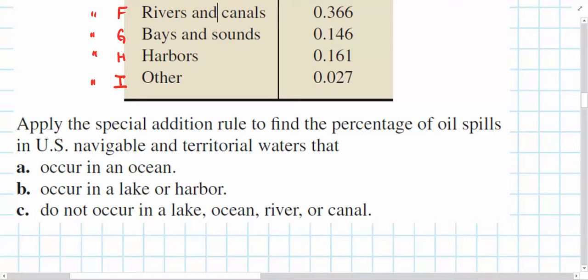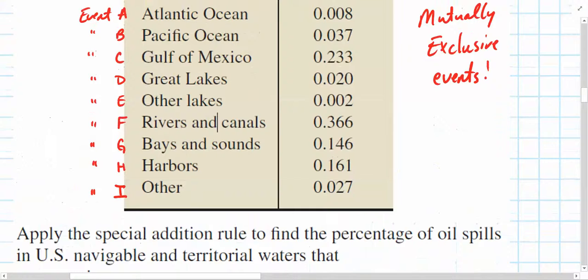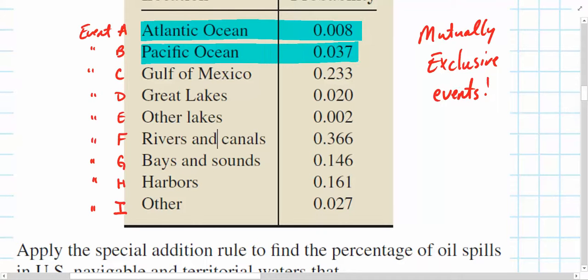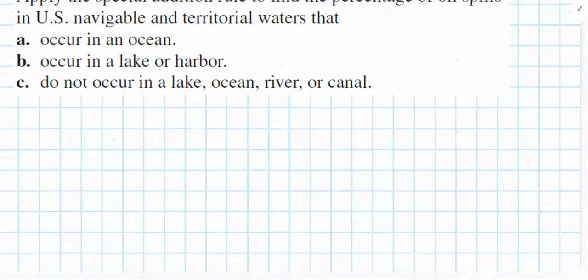So, the instructions tell us to apply the special edition rule to find the percentage of oil spills in U.S. navigable and territorial waters that occur in an ocean. So, all of those events that occur in an ocean, well, there we go, we've got the Atlantic Ocean, Pacific Ocean, and that's it. Gulf of Mexico, Great Lakes, other lakes, rivers and canals, bays and sounds, harbors, and others. So, these are the only two events that include an ocean. So, those are events A and B.